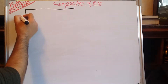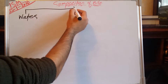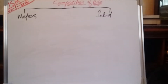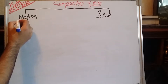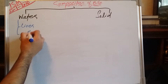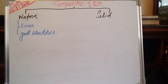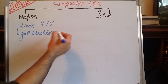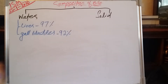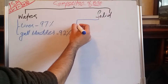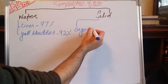The bile is mainly composed of two things: the water portion and the solid or solute portion. The solid portion is further divided into two according to the concentration of water — that is, in the liver and in the gallbladder. In the liver, the concentration is up to 97%, while in the gallbladder it is 92%. The solid portion has further organic and inorganic portions.